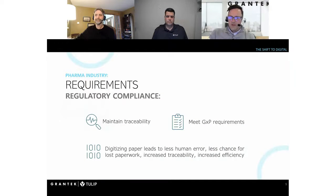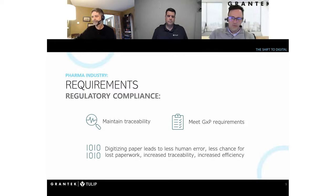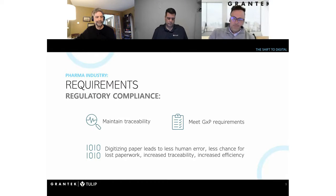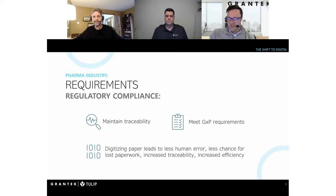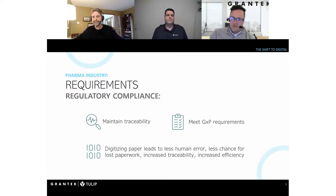Zooming in on the regulatory compliance requirement of the industry — traceability and GXP are paramount. Organizations need to prove that they're in a state of control, making their products the right way, the same way every time, according to qualified procedures. Paper wasn't really meant for the plant floor, and chasing paper around leads to deviations. Digitizing records leads to less human error, less chance for paperwork to be lost, a digital thread to increase traceability, and an increase in overall efficiency. Digitalization seems like a no-brainer.